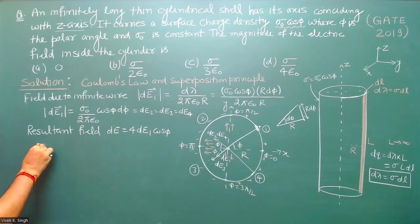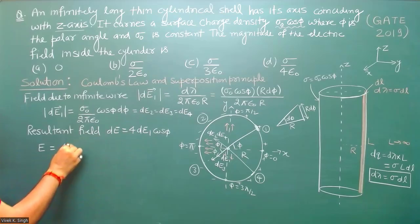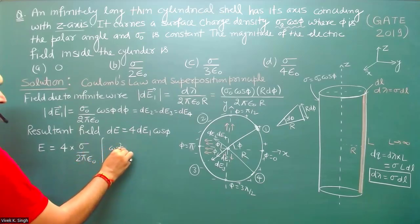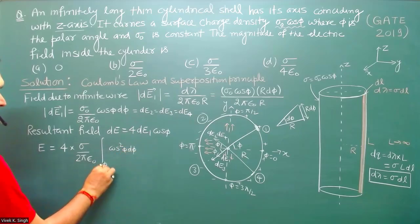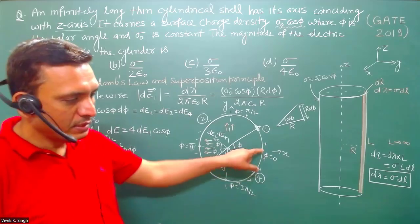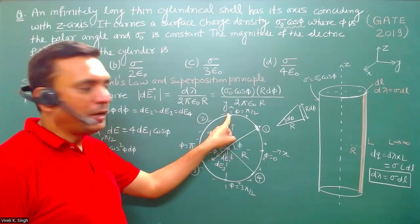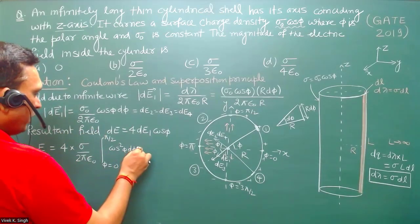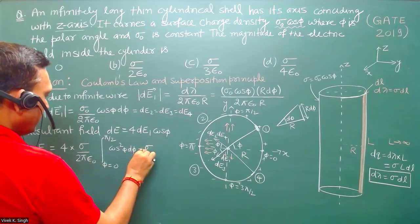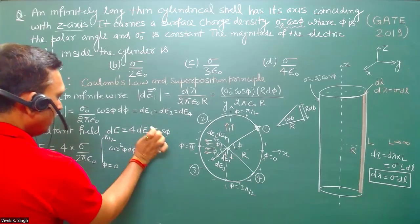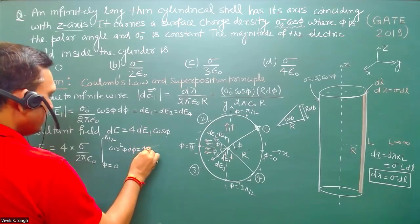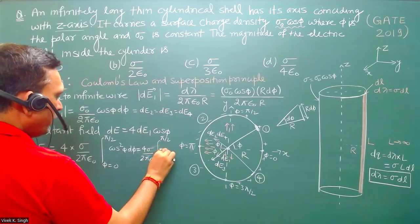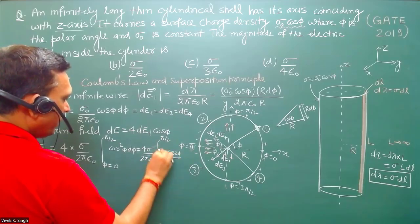The resultant field is written as 4 times σ₀ / (2πε₀) integrated from 0 to π/2 of cos²(φ)·dφ. We integrate over 0 to π/2 for one segment and multiply by 4 for the four segments. Using the identity cos²(φ) = (1 + cos2φ)/2, the integral becomes 4·(σ₀ / 2πε₀) × ∫₀^{π/2} (1 + cos2φ)/2 · dφ.